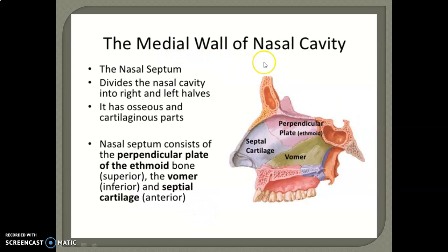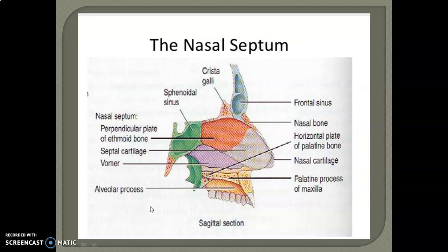Next is the medial wall of the nasal cavity. The nasal septum divides the nasal cavity into right and left halves. It has osseous and cartilaginous parts. The nasal septum consists of the perpendicular plate of the ethmoid bone, the vomer, and the septal cartilage.